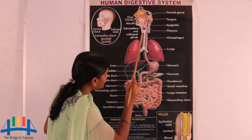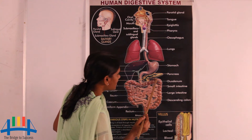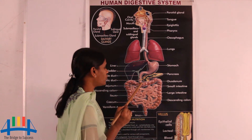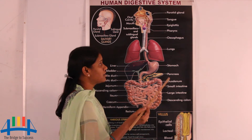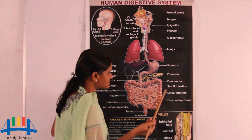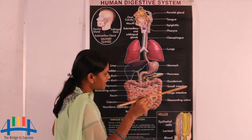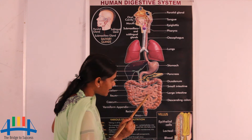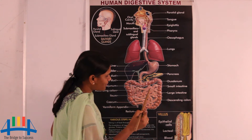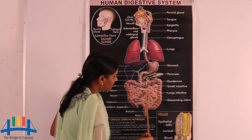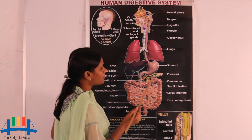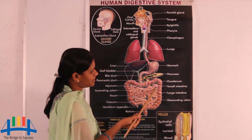Another important internal part of the alimentary canal is the large intestine, which surrounds the small intestine. The small intestine is a very important part — it is where absorption takes place. Millions of villi are present in the small intestine, which absorb nutrition from the digested food into the blood. About 90% of digestion is completed in the small intestine.